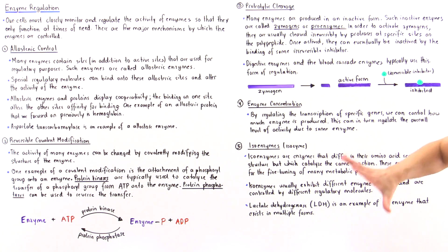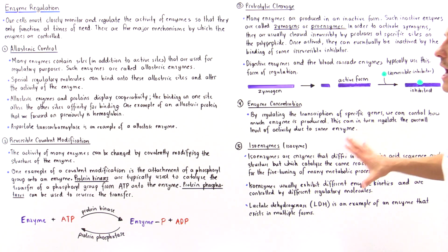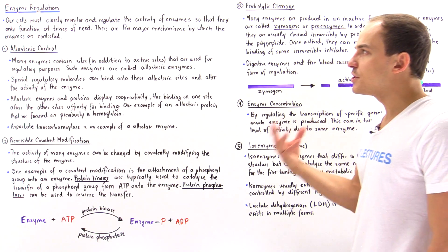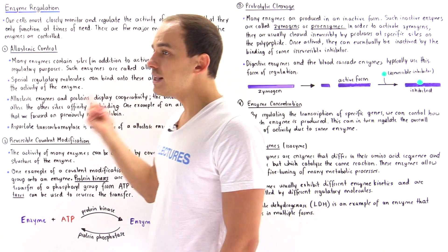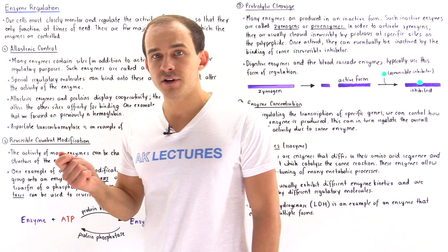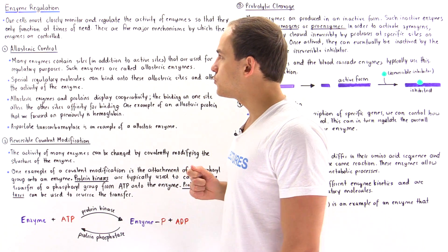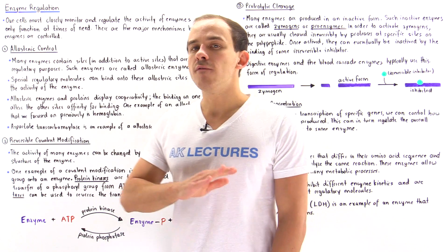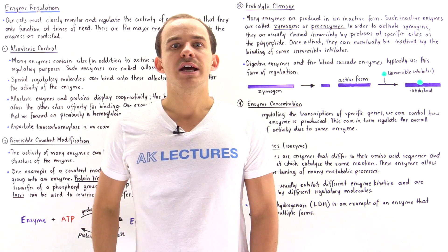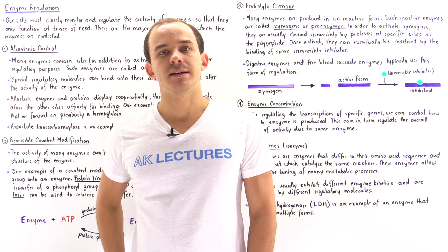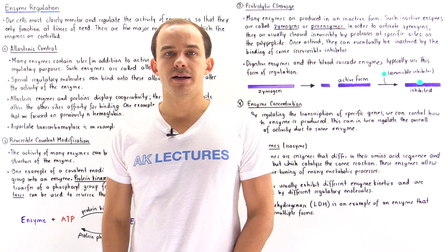So these are the five different types of methods by which our cells can regulate the activity and functionality of all the different types of enzymes that exist inside our body.